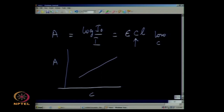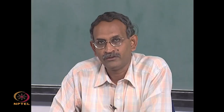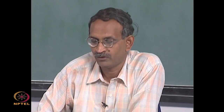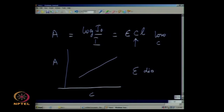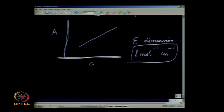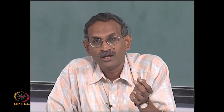The dimension of epsilon: since absorbance is a dimensionless ratio (logarithm of two same quantities) and concentration is in moles per liter, and the length of the cell is in centimeters, the right-hand side must also be dimensionless. Therefore, epsilon has units of liters per mole per centimeter. This is the standard unit employed in determining values of epsilon. This linear law between absorbance and concentration is valid for small concentrations, making it very useful for determining unknown concentrations of small amounts of substances in the laboratory using UV-visible spectrometers.